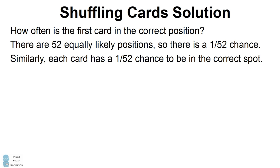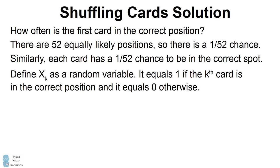So to solve this problem, I'm going to define a random variable x sub k that equals 1 if the kth card is in the correct position and it equals 0 otherwise. This will allow us to define the problem in terms of these random variables.